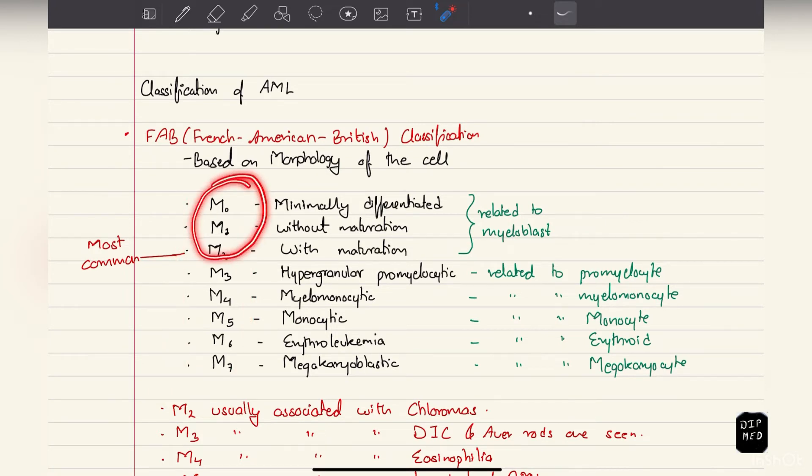M0, 1, and 2 are related to myeloblast, where M0 refers to minimally differentiated leukemia, M1 is myeloblastic leukemia without maturation, and M2 is with maturation. M3 is related to promyelocyte, called hypergranular promyelocytic leukemia. M4 is myelomonocytic leukemia, M5 monocytic leukemia, M6 erythroleukemia, and M7 megakaryoblastic leukemia. Out of all these, M2 is the most common.